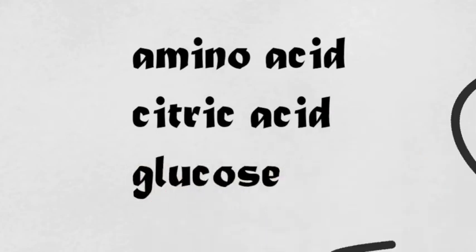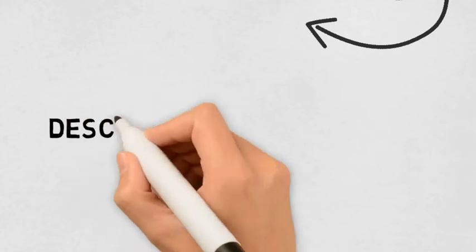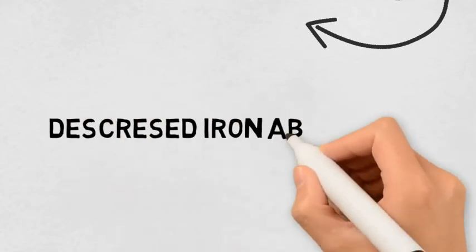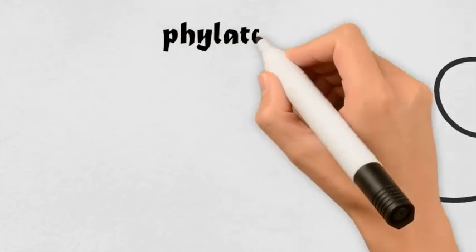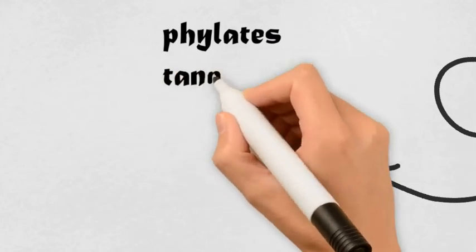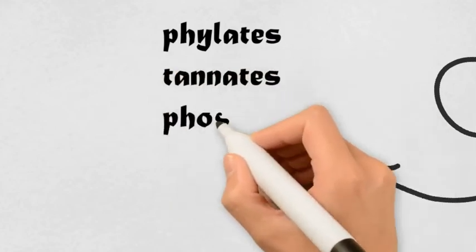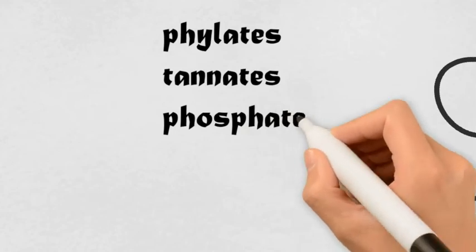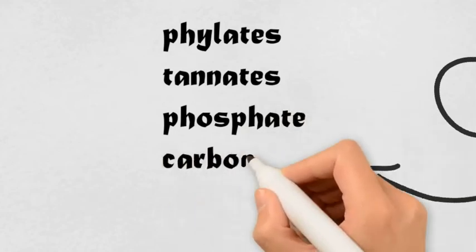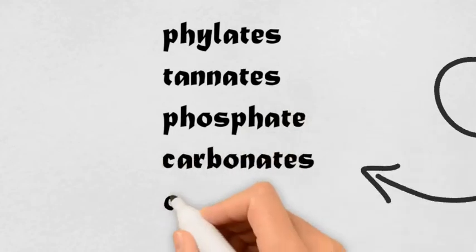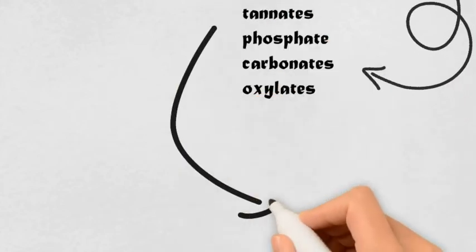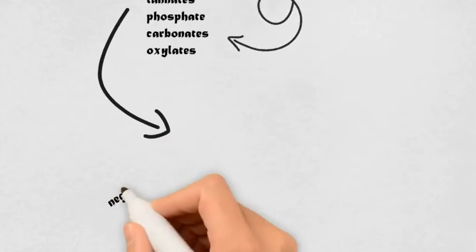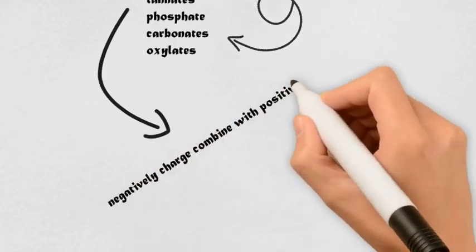Similarly, there are substances which decrease the absorption of iron. These are phytates, tannates, phosphates, carbonates, and oxalates. All five of these substances are negatively charged. Since iron is positively charged, they combine with the positively charged iron and do not allow it to be absorbed.